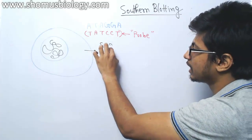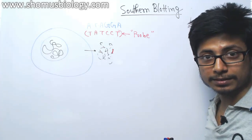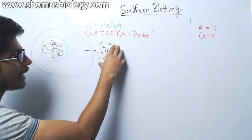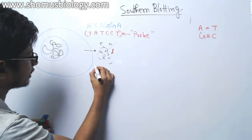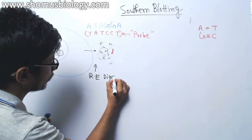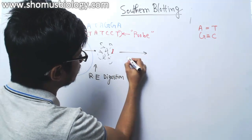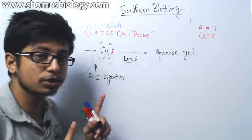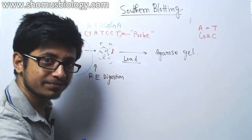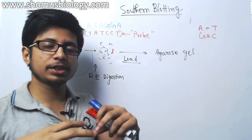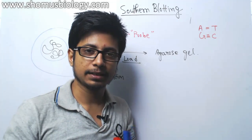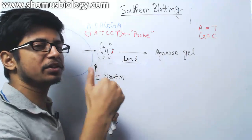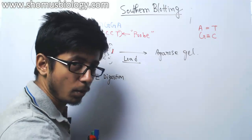Once these smaller fragments are generated upon treatment with restriction endonuclease, some of these fragments may carry our target DNA sequences and the rest do not. Once these fragments are generated, we load them into an agarose gel — the process known as gel electrophoresis. Gel electrophoresis is a process that helps to separate the mixture of DNA based on their length. The larger the DNA, it will travel less; the smaller the DNA, it will travel more in the gel matrix.